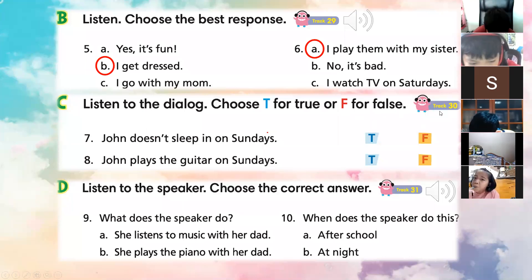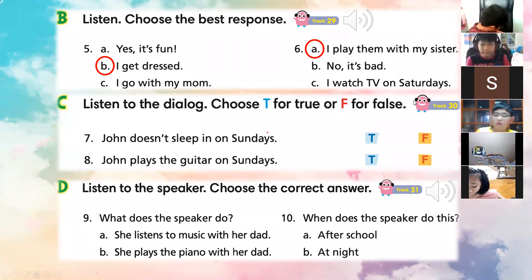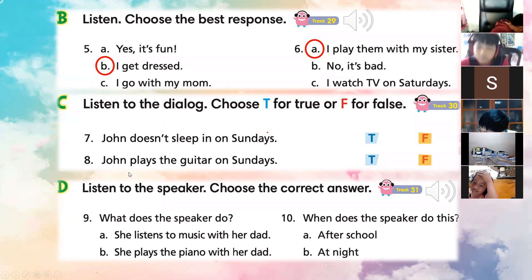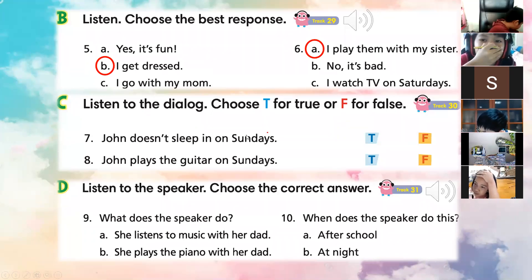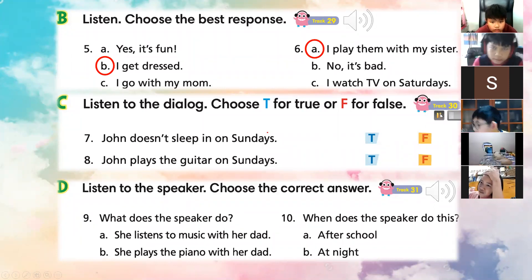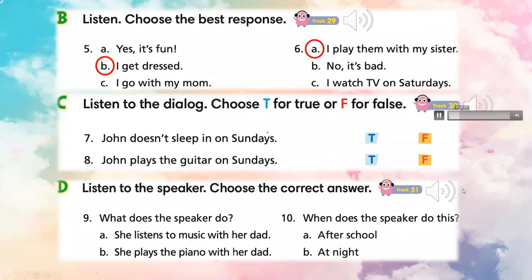Now we have a conversation. We are going to play the track. We have to listen to the dialogue and choose T for True or F for False. Before we play the track, we are going to read the questions. Number seven: John doesn't sleep in on Sunday. Number eight: John plays the guitar on Sunday. Listen carefully to the dialogue. Choose T for True or F for False.